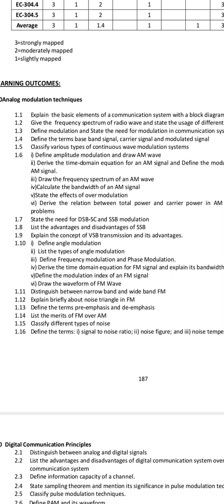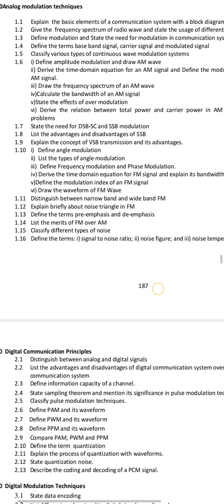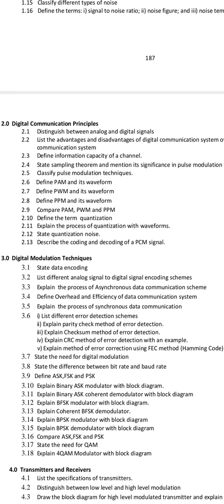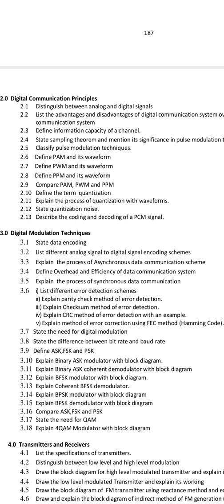For Chapter 3, for problems we have to do error detection. There are many problems in the textbook — practice the Hamming code. You can use the transmitter and receiver and detect errors using some methods. The questions are: explain ASK with block diagram, explain FSK with block diagram, explain PSK with block diagram.